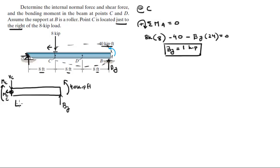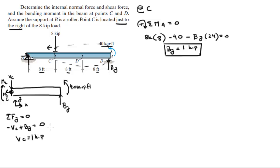Assuming this orientation for X and Y: the sum of the forces in Y equals 0, which means minus the shear plus BY equals 0, making the shear equal to 1 kip. The sum of the forces in X equals 0, and the only force in X is the normal, which makes the normal equal to 0.